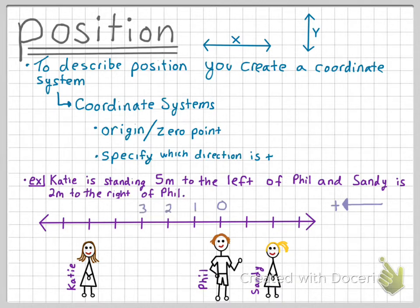this means that Katie is going to be at point 5, and Sandy will be at point negative 2. Do you see that as we go down the coordinate system to the left, points increase in value? This is because we decided to call the positive direction towards the left.